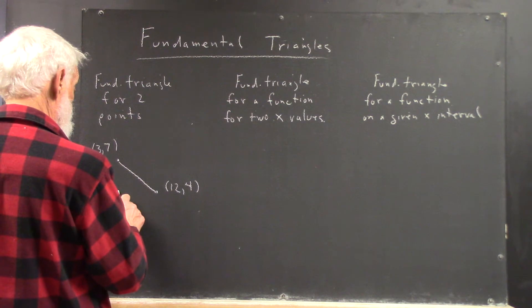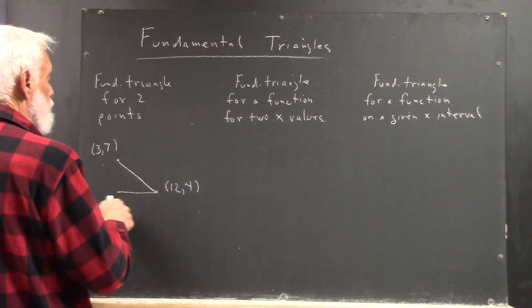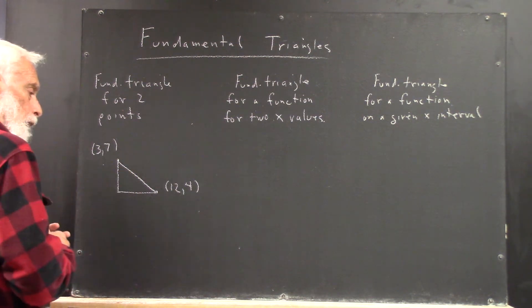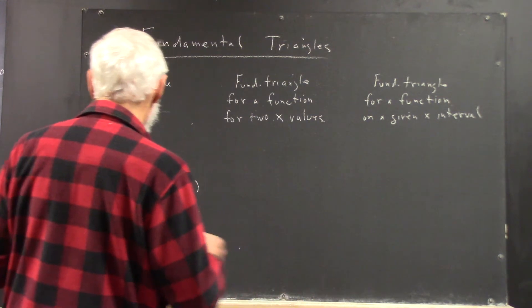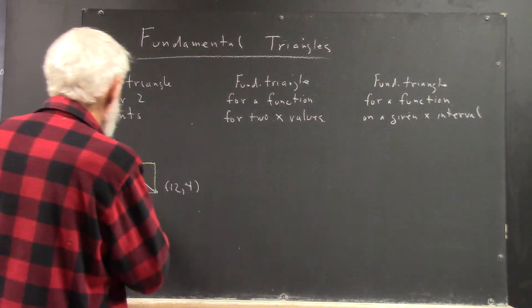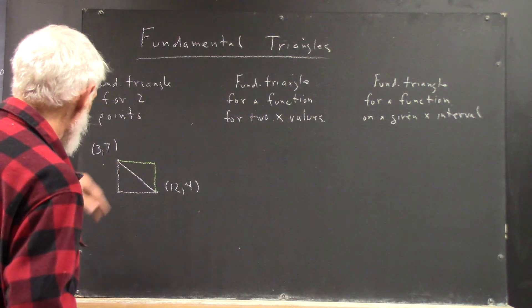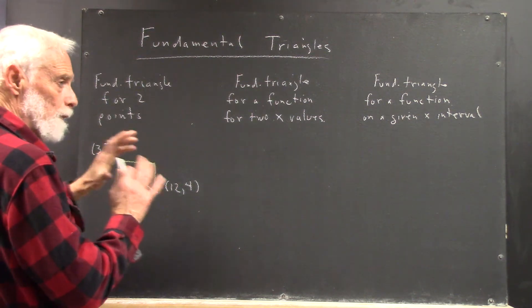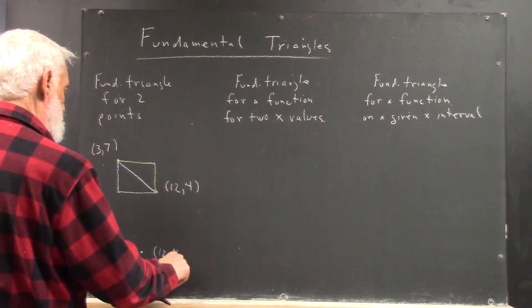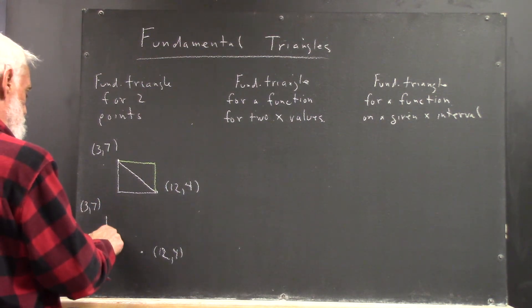There are two ways I can draw this triangle — in fact, there are two fundamental triangles. I can draw one with the horizontal leg through this vertex and the vertical leg through this vertex, or I could draw the triangle with the horizontal leg through this vertex and the vertical leg through the other. I don't draw them both, but here I'm showing you that there are two of them, and they're similar triangles. So I'm going to redraw the triangle and go ahead and use the first one I drew.